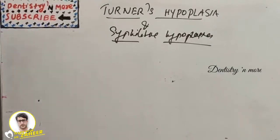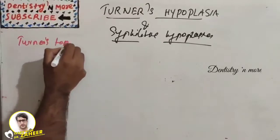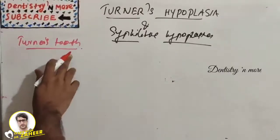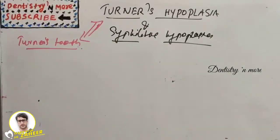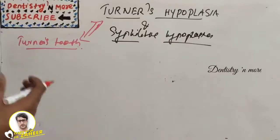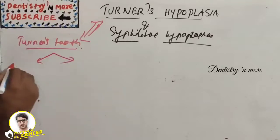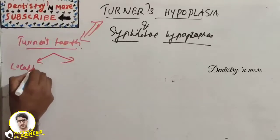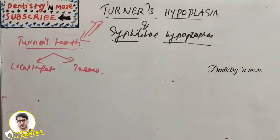Turner's hypoplasia is also known as Turner's tooth — note that Turner's syndrome is a different condition entirely. Turner's tooth is a localized type of hypoplasia caused by either local infection or trauma to the preceding deciduous tooth.